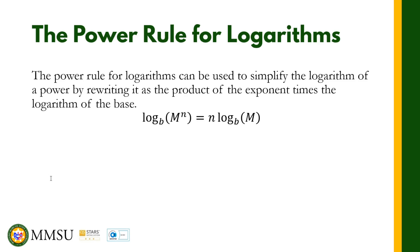As you can see here, we have logarithm of m raised to n in base B. This now becomes n times the logarithm of m in base B. The exponent n becomes the coefficient of the logarithm of m in base B. That's how we simplify or rewrite the logarithm of powers.